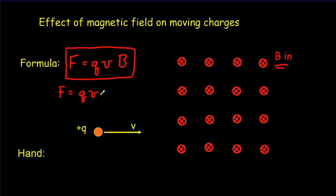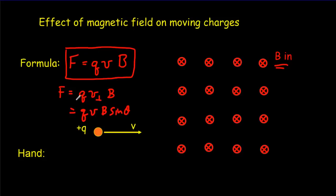In a few minutes, we're going to look at what happens if the velocity is not perpendicular but has a component along the magnetic field. Then our formula would equal Q times the component of the velocity that's perpendicular to that magnetic field, which turns out to be equal to QvB sinθ. This gives us the magnitude of the force.